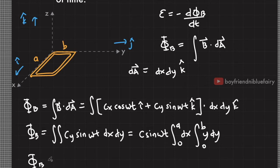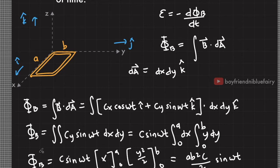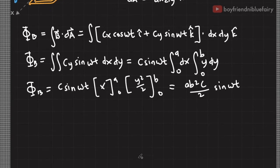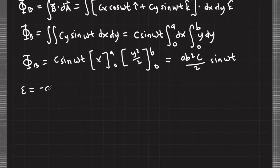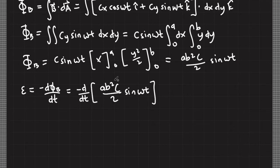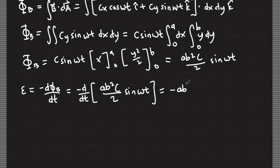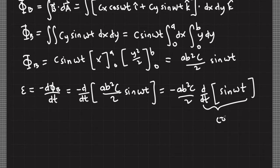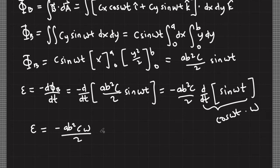Evaluating the integrals and plugging back into Faraday's law, since the constants are independent of the time derivative, taking the derivative of sin(ωt) gives cos(ωt)·ω. The result is: EMF = −(A·B²·C·ω / 2)·cos(ωt).